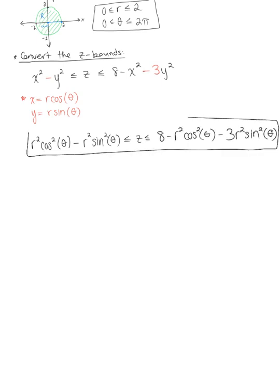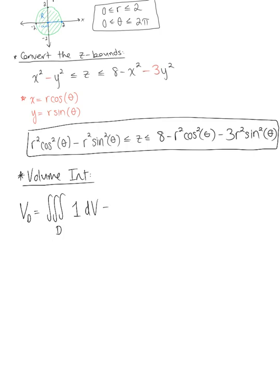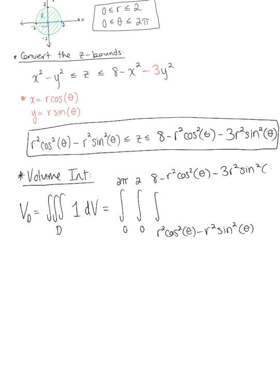We are now ready to set up the volume integral in cylindrical coordinates. The volume of solid region D is the triple integral over D of 1 dV. In cylindrical coordinates, the outer integral is with respect to theta from 0 to 2π, the middle integral is with respect to r from 0 to 2, and the inner integral is with respect to Z from r²cos²θ - r²sin²θ to 8 - r²cos²θ - 3r²sin²θ, with differential r dZ dR dθ.